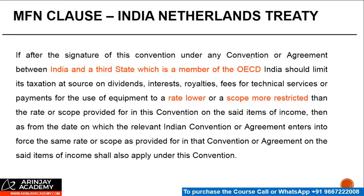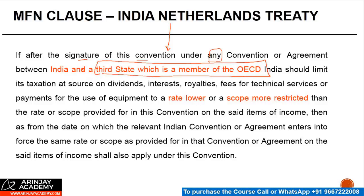Let's look at one of the MFN clauses. If after the signature of this convention — which is the treaty between India and Netherlands — under any convention, any treaty or agreement between India and a third state which is a member of the OECD. This means that if India enters into a treaty with a non-OECD country and that contains some better clauses, those will not automatically apply here. It's only a treaty with the OECD countries that triggers this clause.